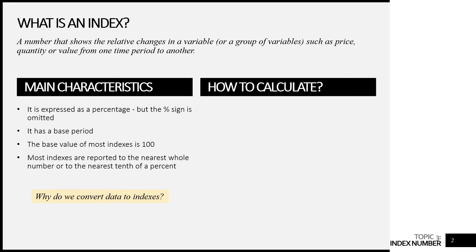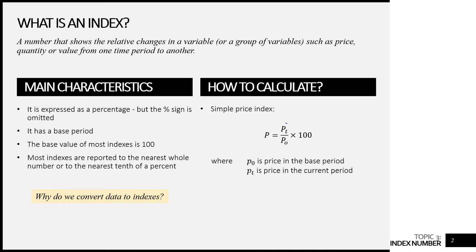So how do we calculate an index? I'm going to share with you the easiest form of index, which is called the simple price index. To calculate it, we simply find the ratio between two prices — PT, the price at the current period, divided by PO, the price at the base period, times 100. It's easy to remember: the base price should always be at the bottom.